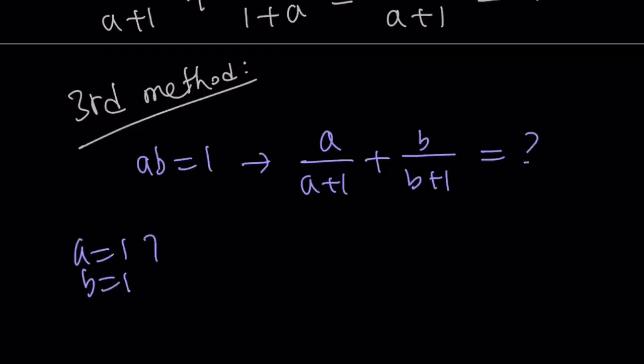How about a equals 1 and b equals 1? That works, right? Because their product is 1, so it's good. Replace a with 1, 1 half. b with 1, 1 half. You get 1. Is that the answer? Are you sure?